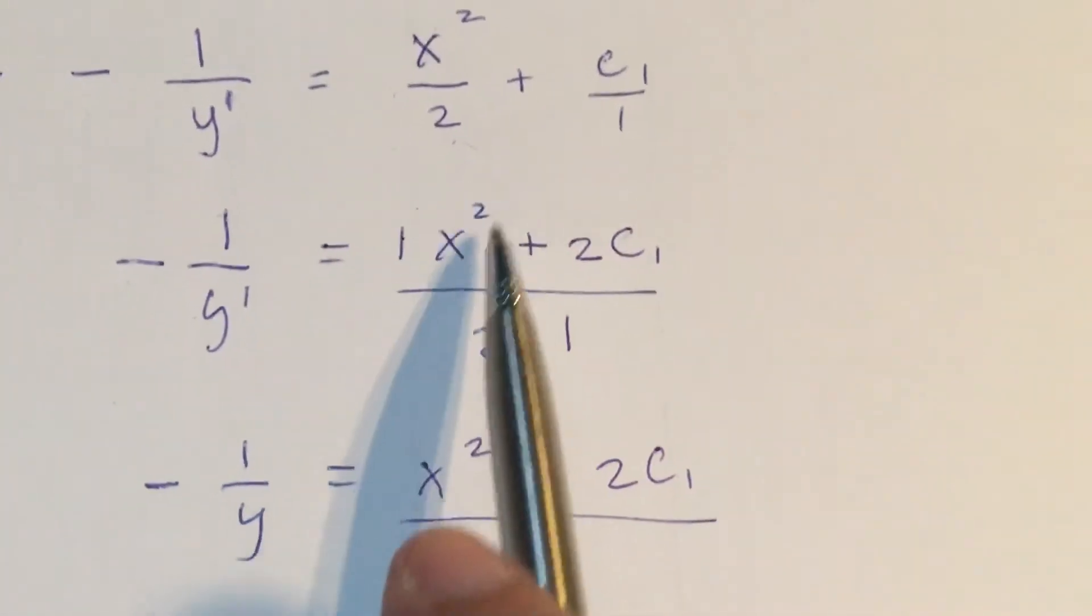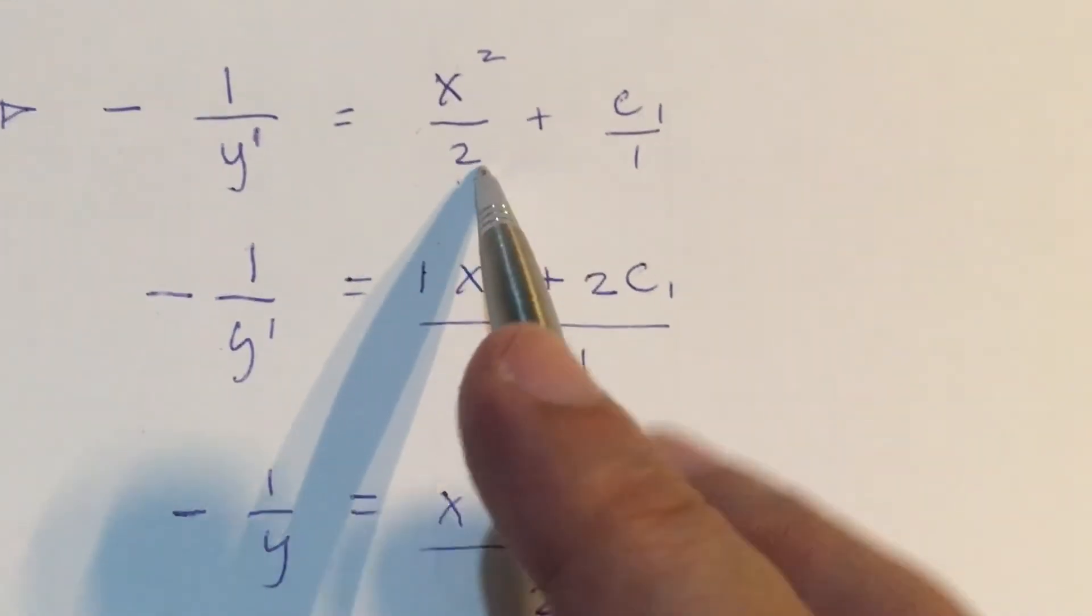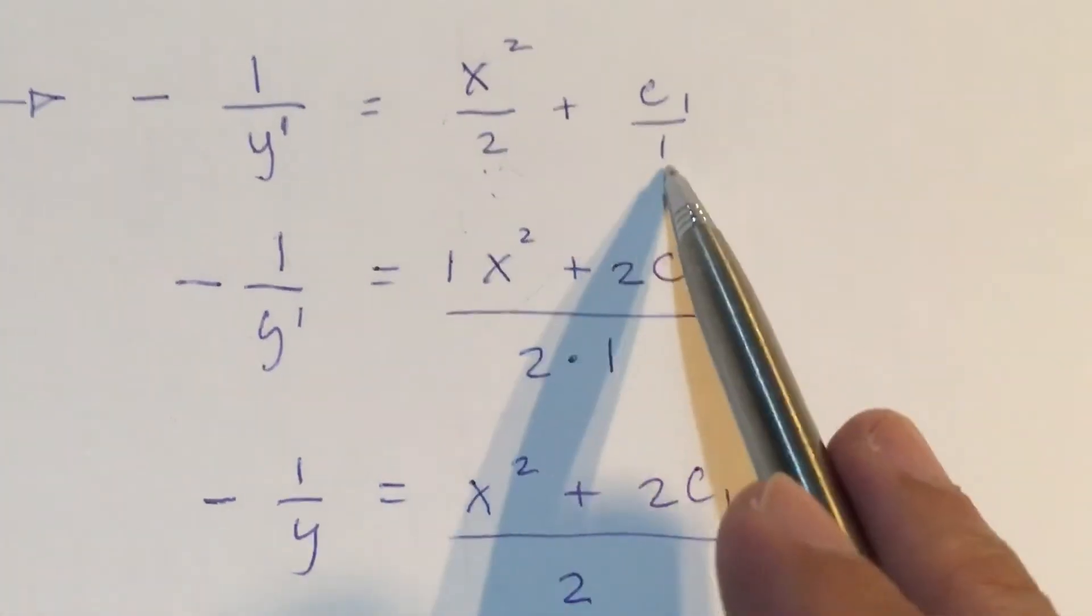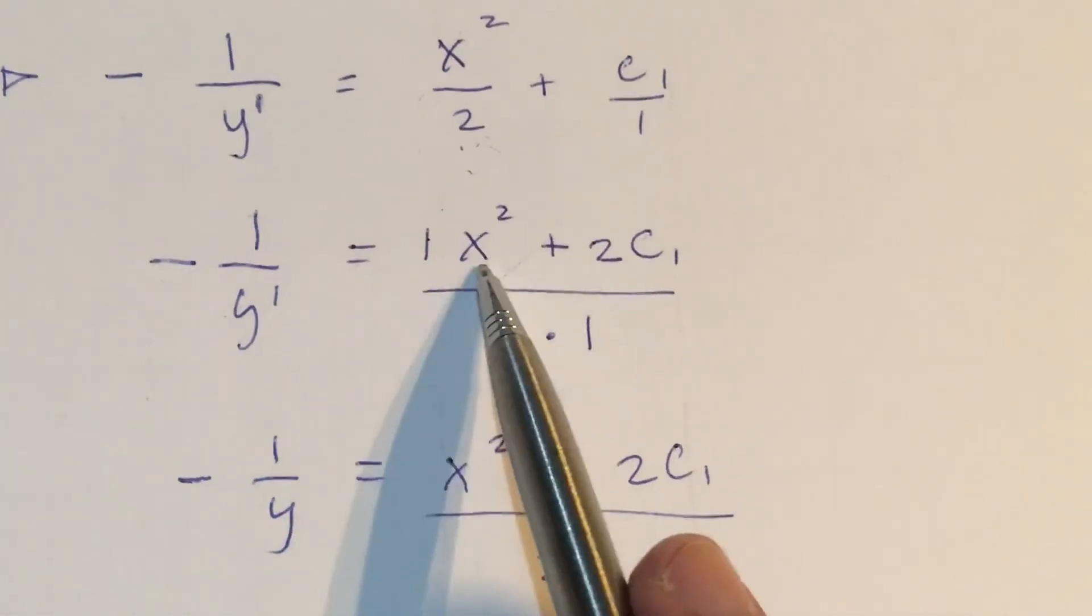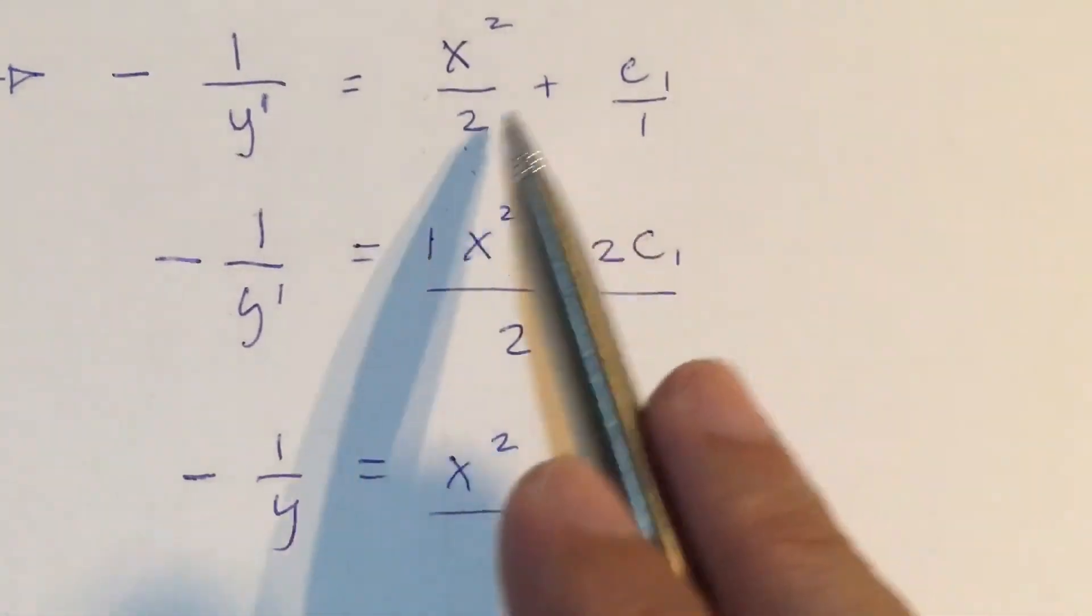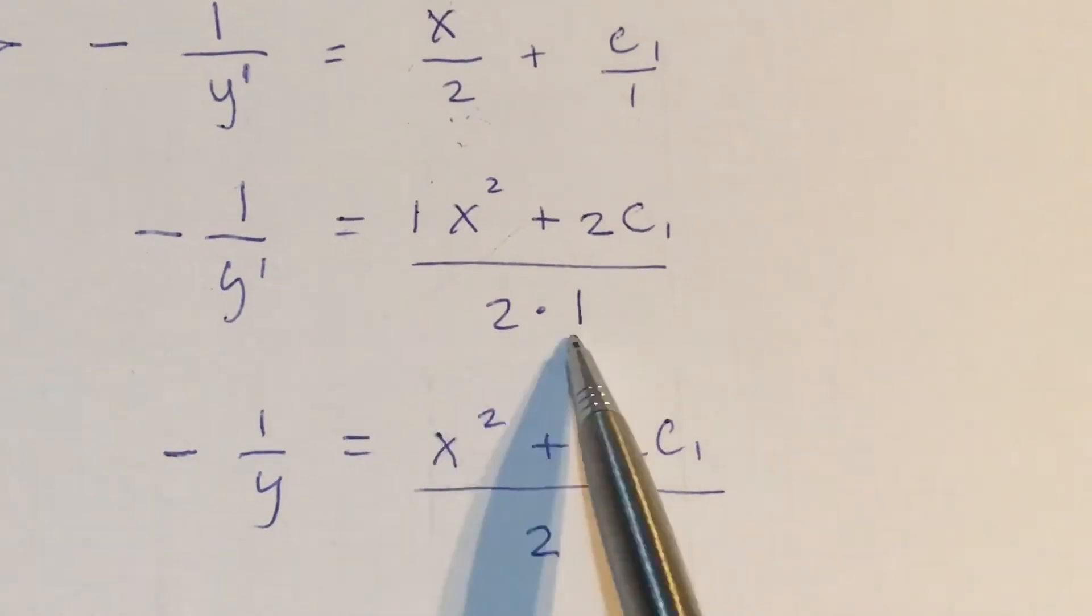Add this expression by cross-multiplying it. 2 times C, 2 times x raised to the second power, and at the denominator, 2 times 1.